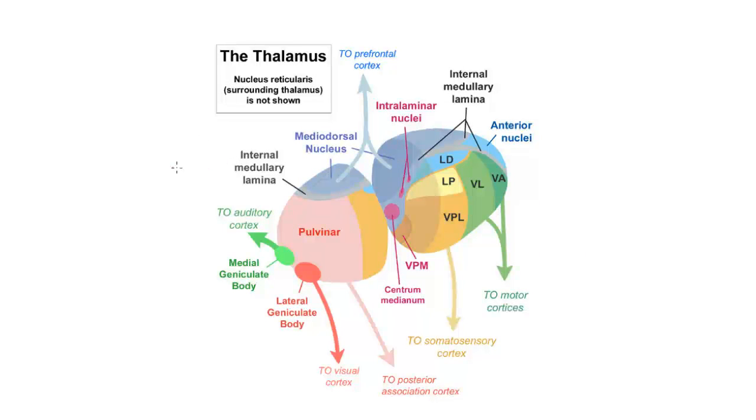The thalamus is the gateway for all discriminative information that makes it to cerebral cortex. So it's the gateway to perception.